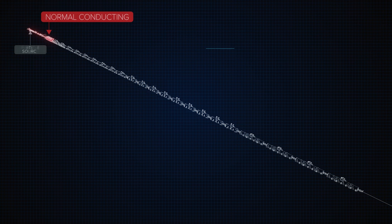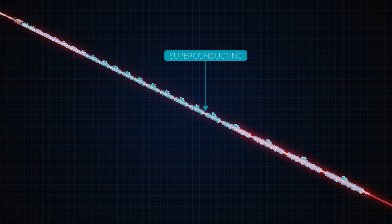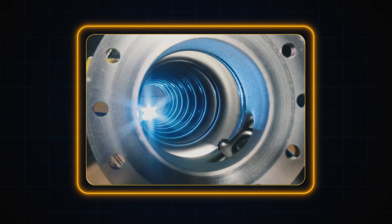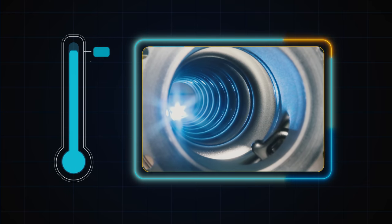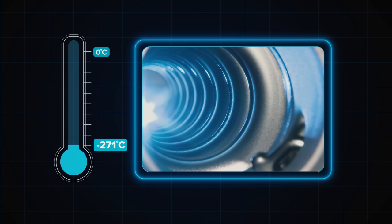Next, the particles will enter the superconducting section of PIP2. It is by far the longest section of the machine. It also is powered by radio frequency waves. But here, the structures are cavities made of niobium. When cooled to minus 271 degrees Celsius, they propel particles much more efficiently than the ones made of copper.